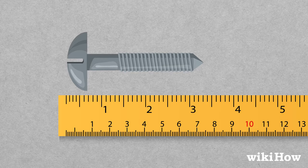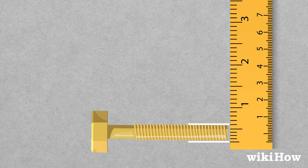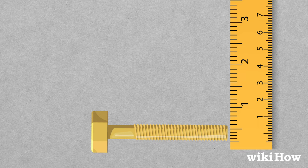To get the diameter of a flat tip screw, put the end of the screw against your ruler or measuring tape. Measure the width across the tip in either fractions of an inch or in millimeters.